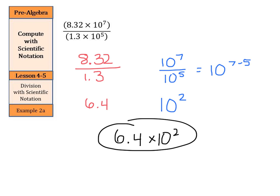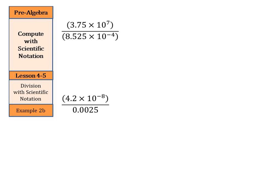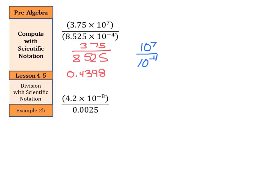Division is very similar to multiplication: divide the numbers in front, and for the powers of 10, subtract the exponents instead of adding. Let's look at two more examples. We set up 3.75 divided by 8.525, which gives us approximately 0.4398. Then 10 to the 7th divided by 10 to the negative 4th is 10 to the 7 minus negative 4, which is 10 to the 11th.